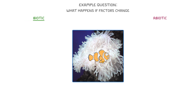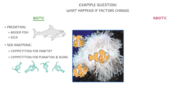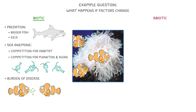For biotic factors, we have predation by bigger fish or eels. We have the sea anemone itself, which acts as the clownfish's habitat, and so there could be competition for that habitat. There could also be competition for the plankton and the algae that the clownfish eat. And always remember the burden of disease that the animals have.